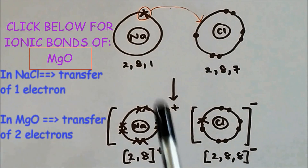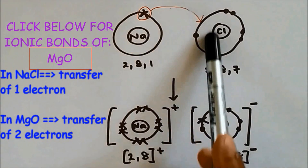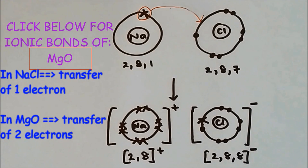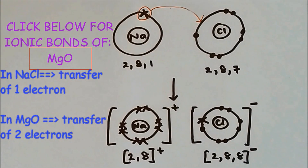For sodium chloride there was only one electron being transferred. But sometimes two electrons have to be transferred to have a full outer shell of electrons, and a good example of this would be MgO, magnesium oxide.